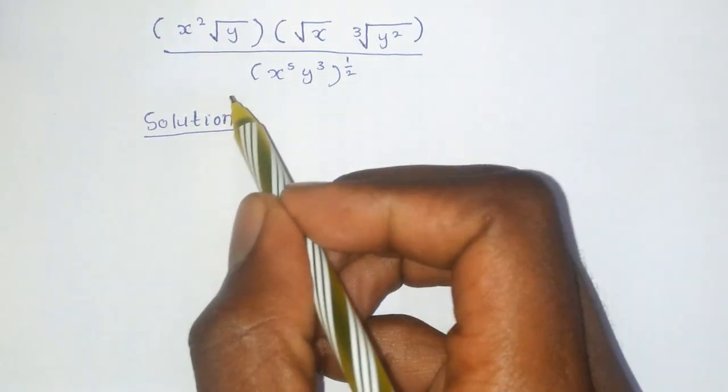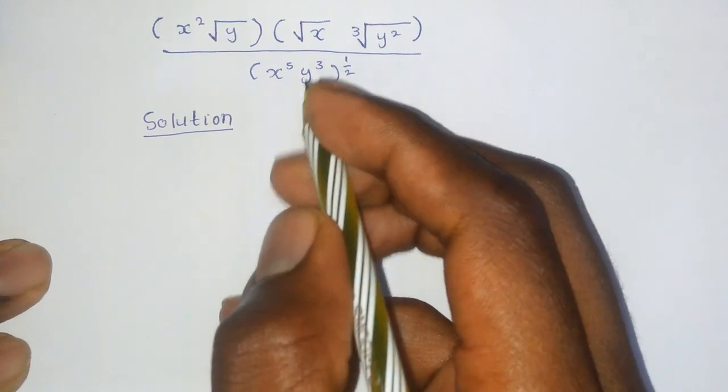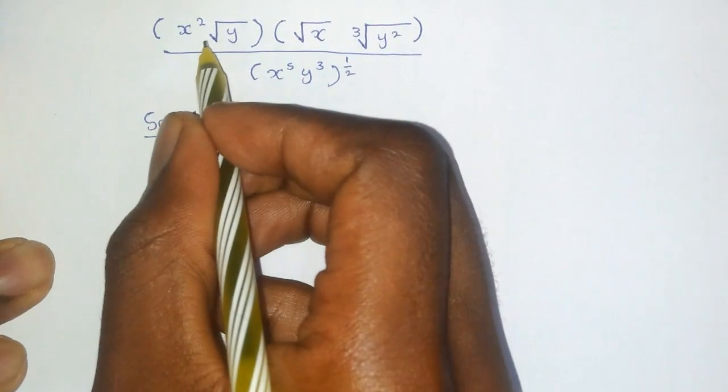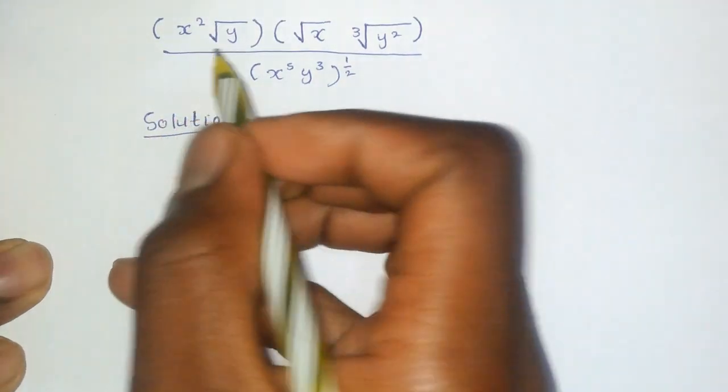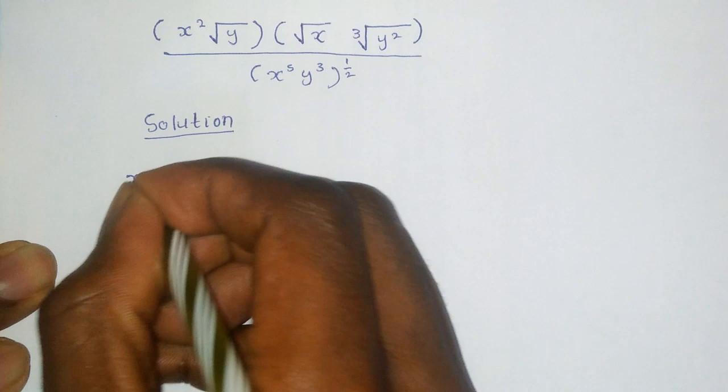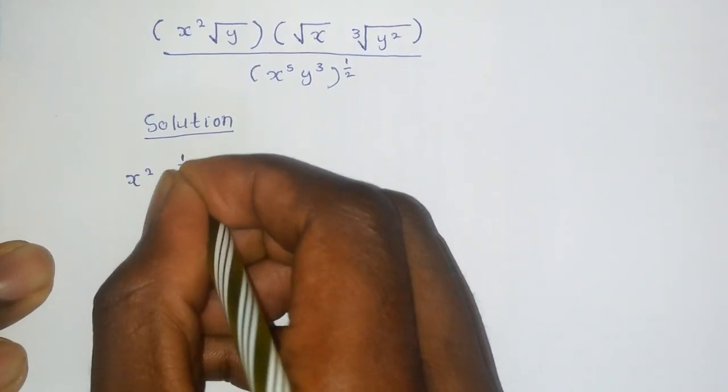I'm going to show you how to solve this algebraic expression. And this is how we do it. x squared into the root of y. This is the same as x squared y raised to a half.